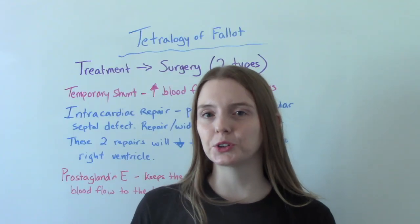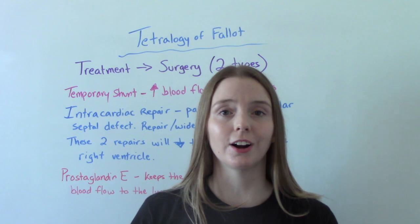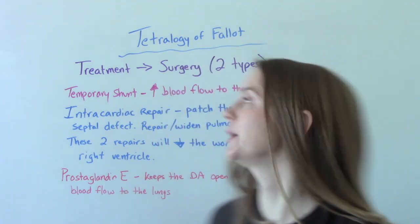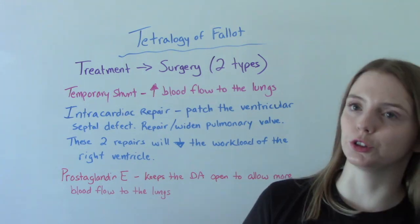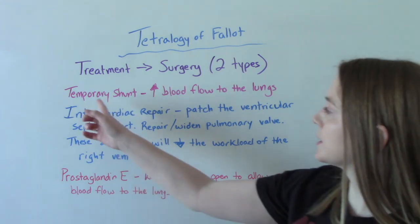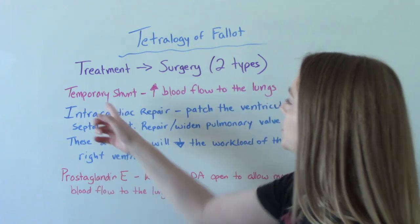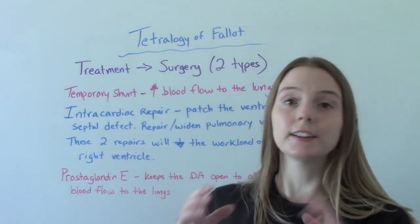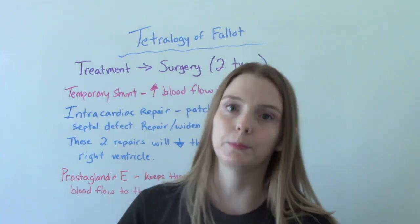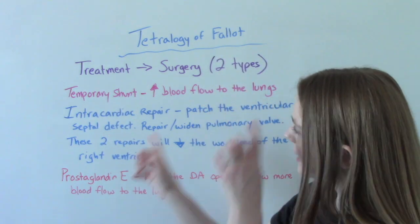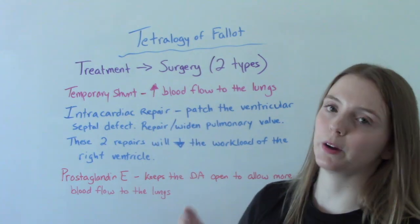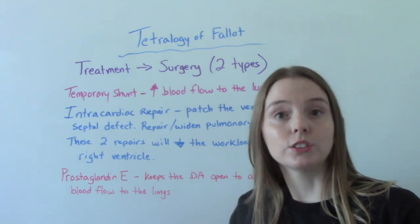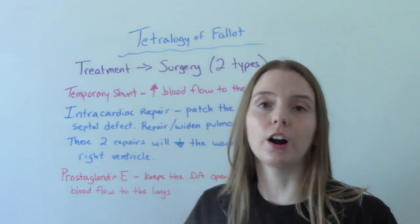How is this treated? A congenital heart defect involves surgery — it needs to be repaired surgically. There are two types of surgery. Typically they'll do a temporary shunt first to help increase blood flow to the lungs, but that's temporary and not final. Then they will do intracardiac repair. Because these are structural problems, we need to fix those structural problems so that the heart can work normally.